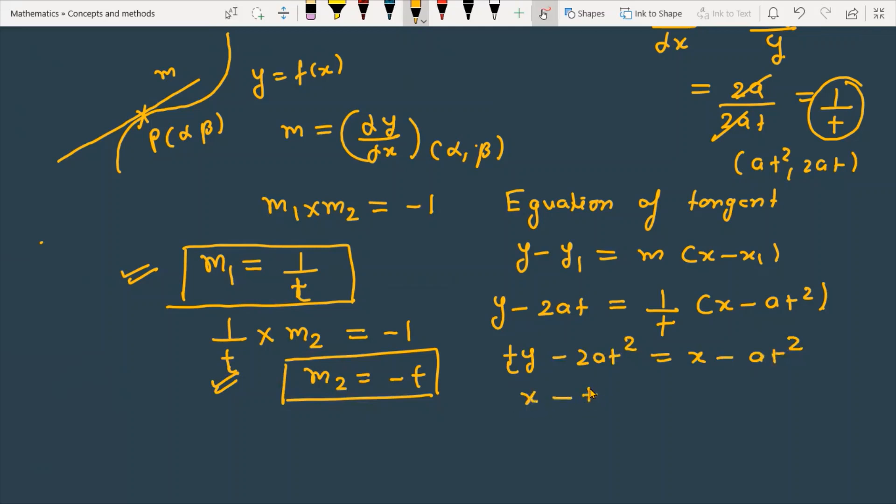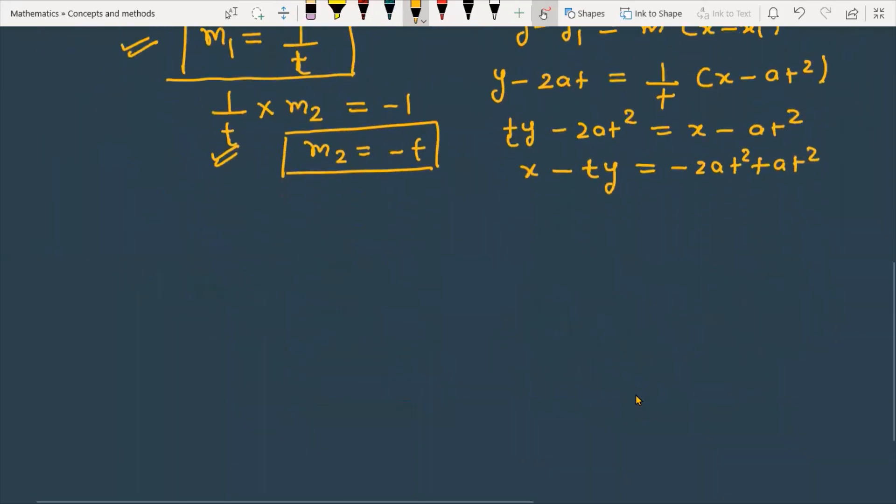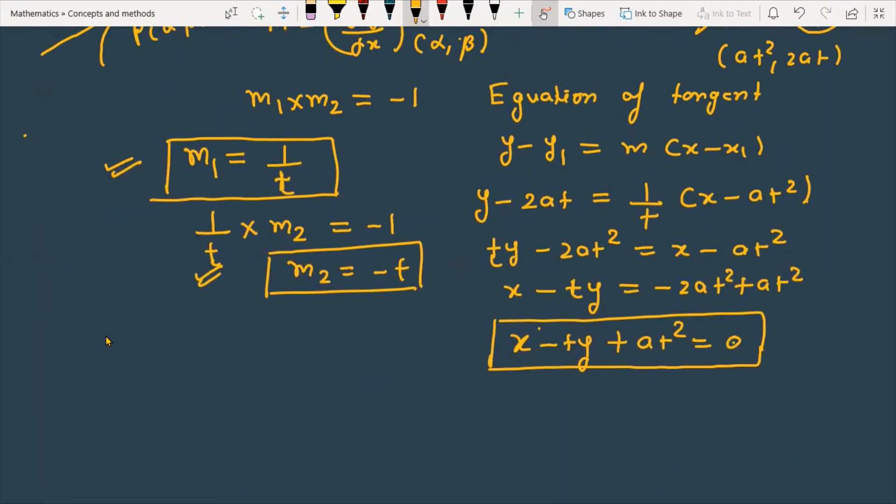Further simplification gives x - ty and this becomes x - ty + at² = 0. So this is the equation of the tangent to the given curve.